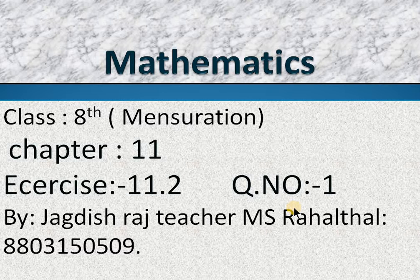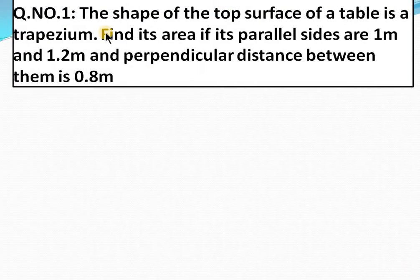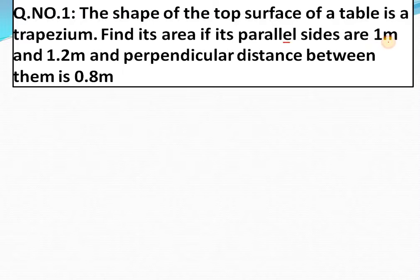Dear students, welcome to home classes. In this session we will discuss question number 1 from chapter 11, exercise 11.2. Question number one: the shape of the top surface of the table is a trapezium. Find its area if its parallel sides are 1 meter and 1.2 meter and the perpendicular distance between them is 0.8 meter.